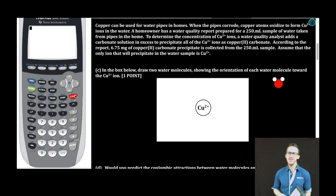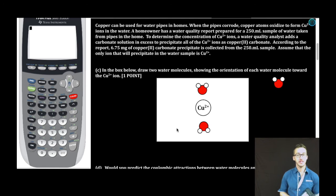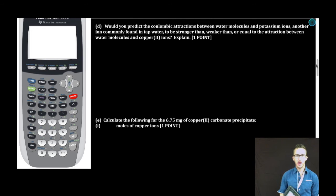Part C: In the box below, draw two water molecules showing the orientation of each water molecule toward the Cu2+ ion. Because I'm fancy, I'm just gonna drag my water molecules. It's important that you orient your water molecules as I have, where the negative ends of the water molecules, the oxygen ends, are facing that positively charged copper 2 ion. Point.